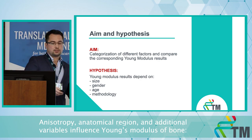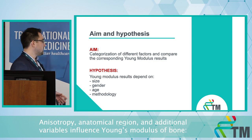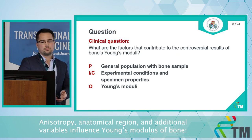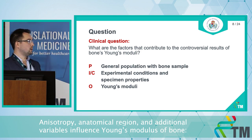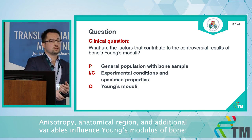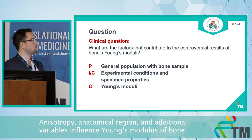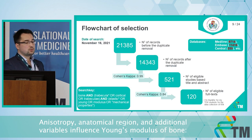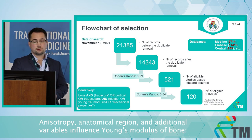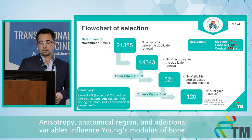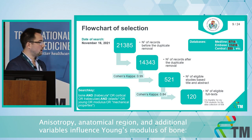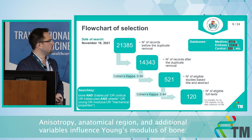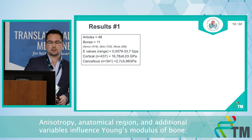My aim is to categorize the different factors and compare them. Our hypothesis is that size, gender, range, and methodology may cause these differences. We searched for articles containing Young's modulus results from healthy human bones only — no bone disease — and only English-written articles. Initially we had more than 20,000 records, and we were able to narrow these down to more than 100 articles from which we performed data extraction across multiple databases.